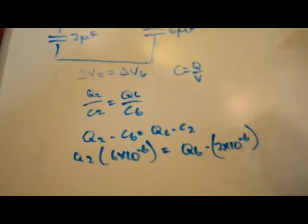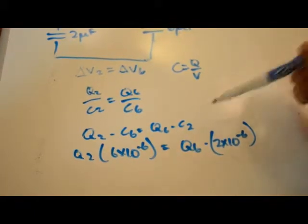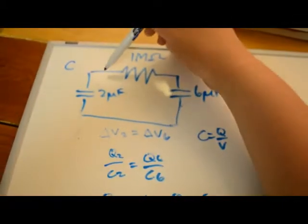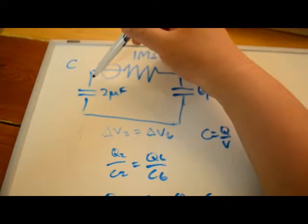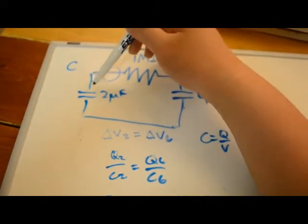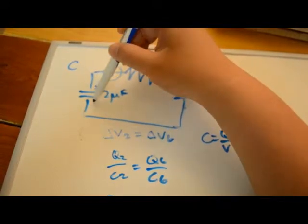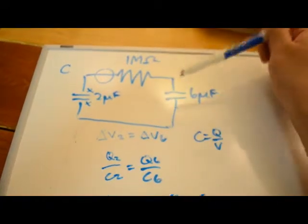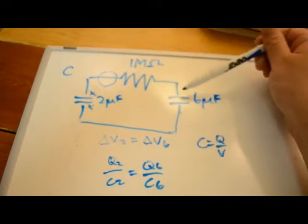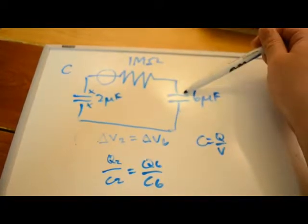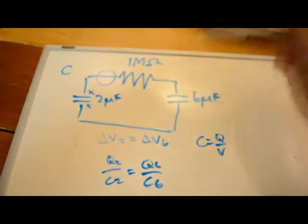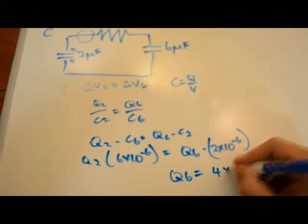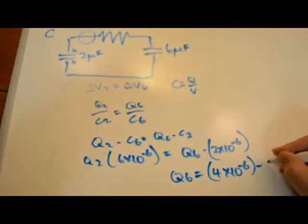The tricky thing is that from part A, we learned that before S2 was opened, there was 4 times 10 to the negative 3rd charge on one of these plates. So when these two capacitors reach equilibrium, these two plates would add up to 4 times 10 to the negative 3rd coulombs.